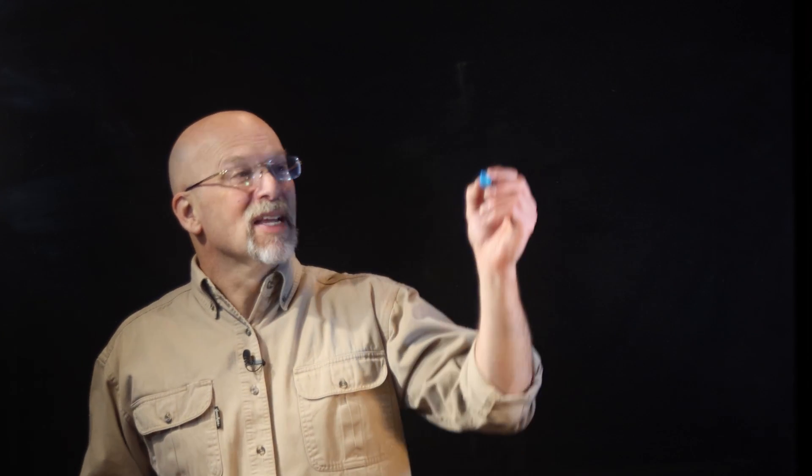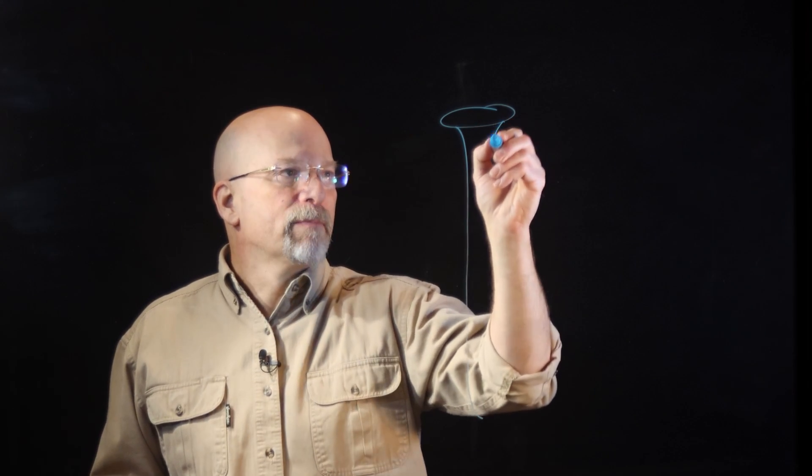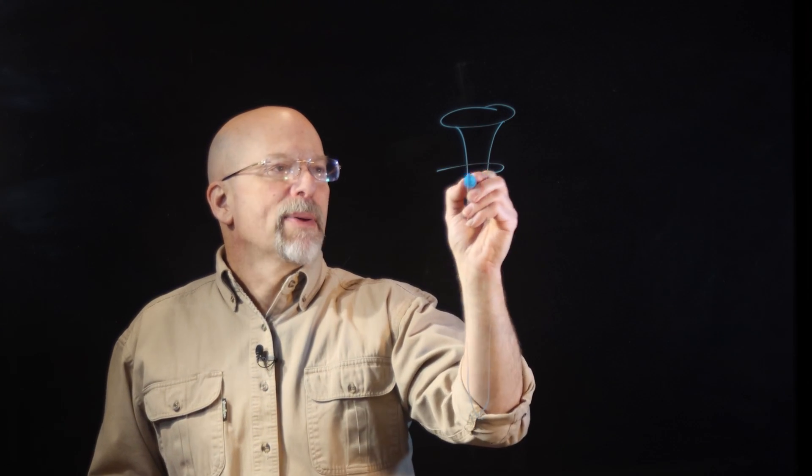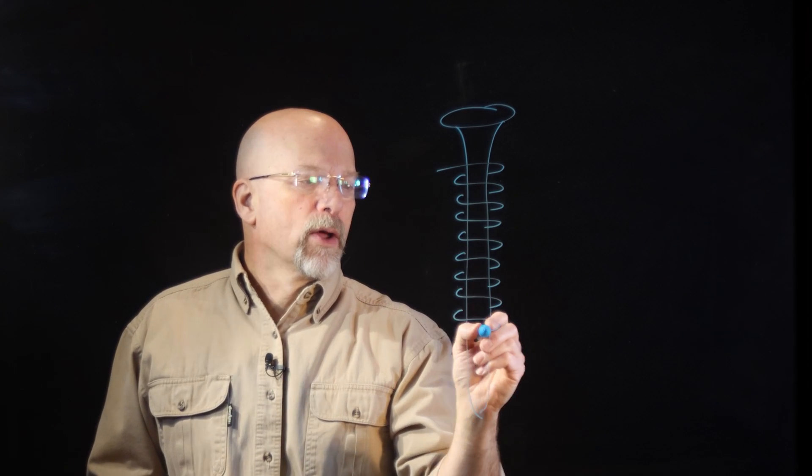One of the toys we would make was we would take a nail, a large nail, and we would wrap a bunch of times around that nail a wire, making a coil.